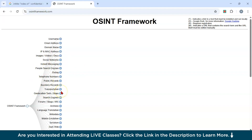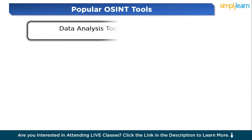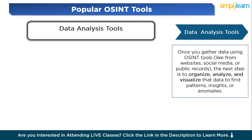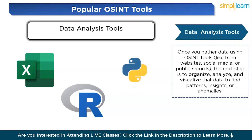Once you've gathered data using OSINT tools from websites, social media, or public records, the next step is to organize, analyze, and visualize it to find patterns, insights, or anomalies. Data analysis tools include Excel for basic sorting and charts, Tableau for advanced interactive dashboards, Python for powerful data analysis, and R for complex statistical analysis. These tools help identify patterns in data breaches or social media trends.